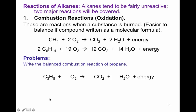Here is the reaction of propane without balanced coefficients. Balance carbons first: three carbons on the left, only one on the right, so put a coefficient of three in front of CO₂. Hydrogens next: eight hydrogens, and they only come in pairs, so the coefficient is four for H₂O. Oxygens last: on the right I have three times two equals six, plus four more equals ten. On the left they come in pairs, so the coefficient for O₂ is five.